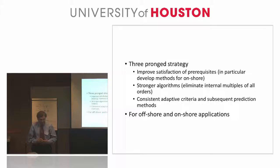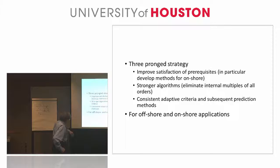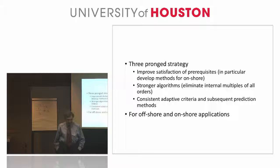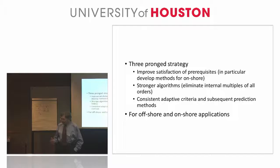There are other terms that do elimination. So we have to remove the shortcomings of the current internal multiple prediction. And last but not least, we need to develop consistent adaptive criteria. By consistent, we mean: find the property of the free surface algorithm, find the property of the internal multiple algorithm, and use that property as the criteria for adaptive subtraction.